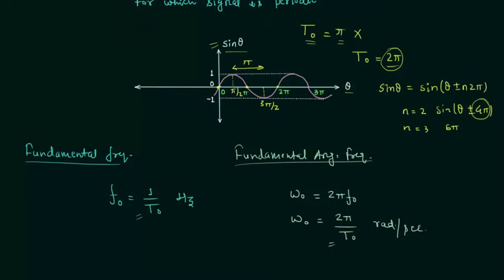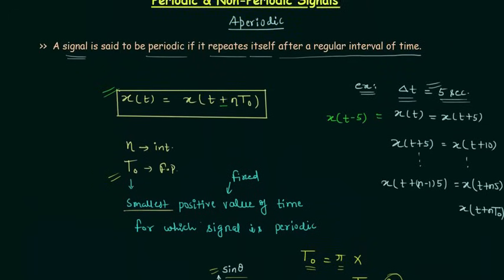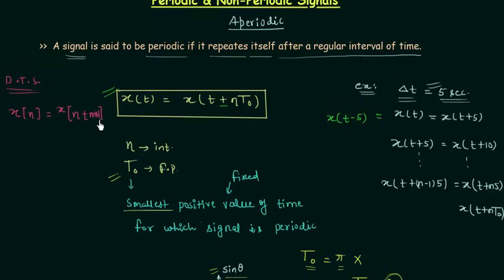Next is the condition of periodicity for discrete time signals. The discrete time signal is represented as x[n]. If this signal is periodic, it must satisfy x[n] = x[n ± m·N], where m is an integer and N is the fundamental period. Importantly, N must be an integer. For continuous time T0 may or may not be an integer, but for discrete time signals the fundamental period must be an integer.